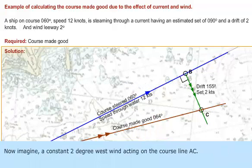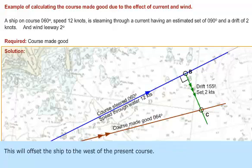Now imagine a constant 2 degrees west wind acting on the course line AC. This will offset the ship towards west of the present course.